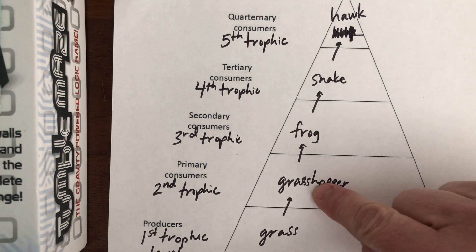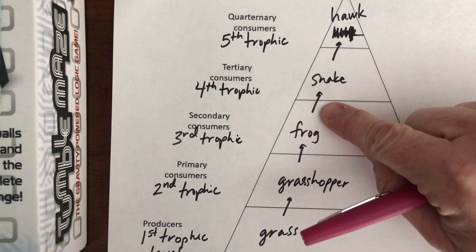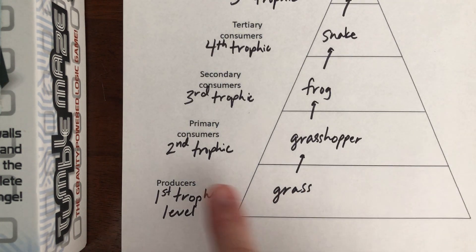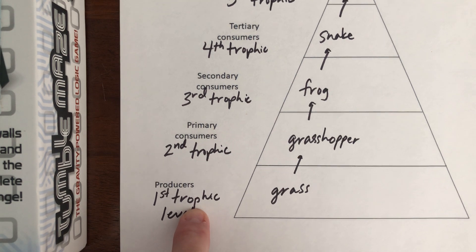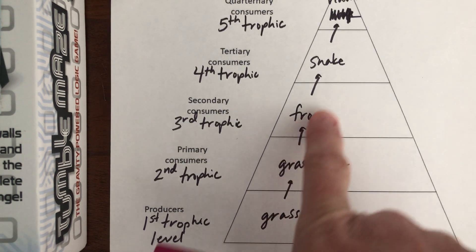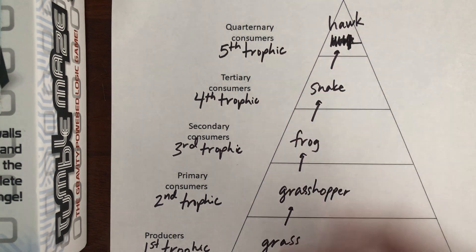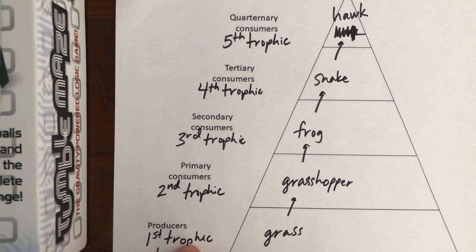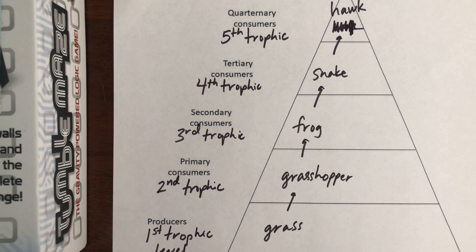Energy is being transferred, and that's what that arrow represents — energy transfer between, here we go with the vocab, the trophic levels. Trophic — T-R-O-P-H-I-C — means feeding. So these are different levels that organisms occupy in our model of an ecosystem. The first trophic level is always the autotrophs. Now I'm going to pause this video and pick up in a little bit on the next one so we can upload more smoothly.